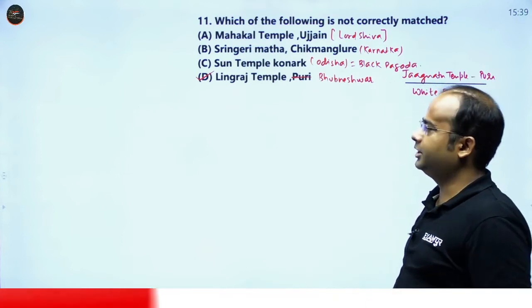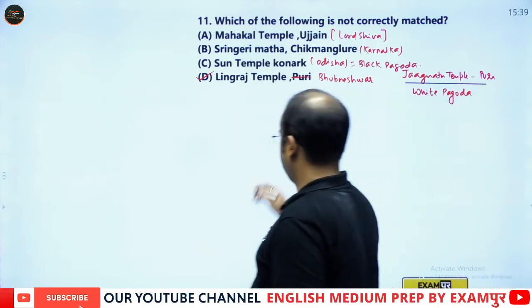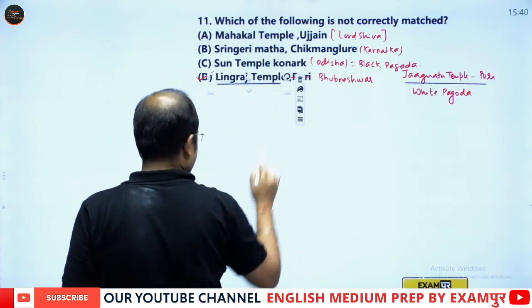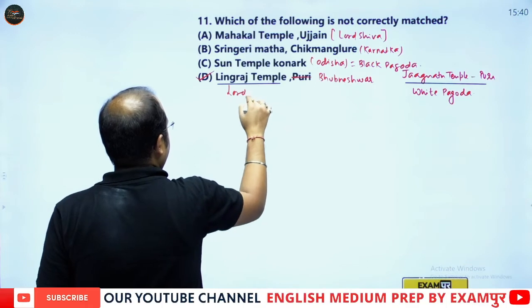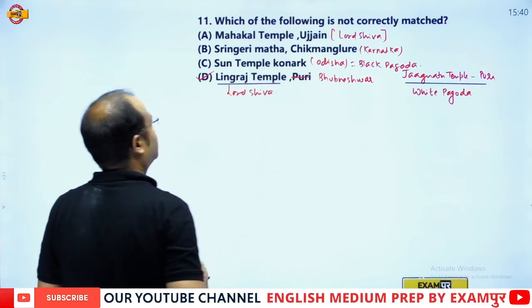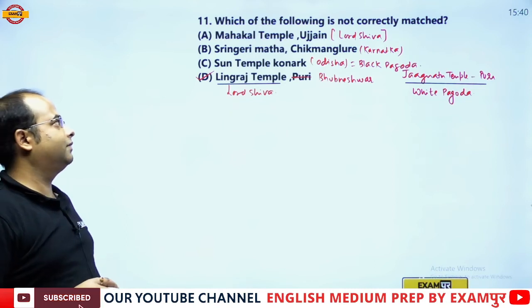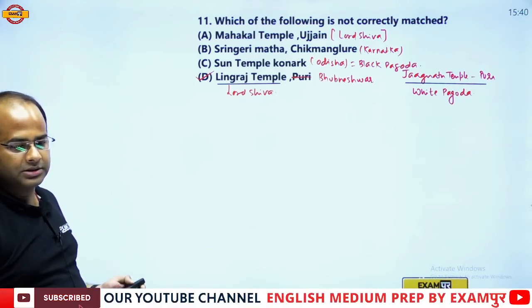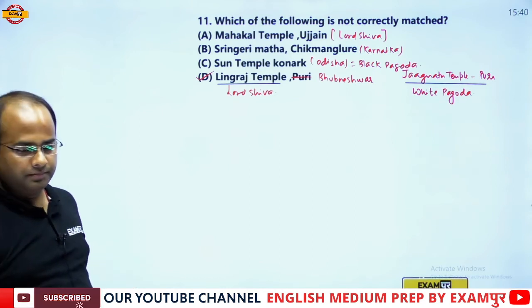Therefore, the correct answer is option D — Lingaraj Temple is dedicated to Lord Shiva and is located not in Puri but in Bhubaneswar.